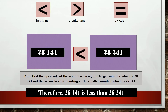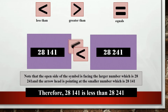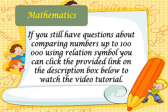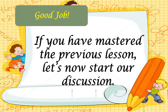Therefore, 28,141 is less than 28,241. If you still have questions about comparing numbers up to 100,000 using relation symbols, you can click the provided link in the description box below. If you have mastered the previous lesson, let's now start our discussion.